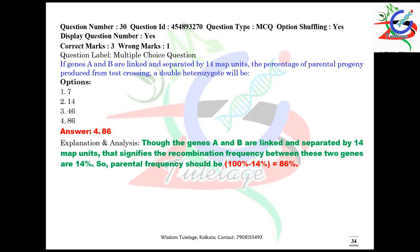Question number 30: if genes A and B are linked and separated by 14 map units, the percentage of parental progeny produced from test crossing a double heterozygote is calculated as: total percentage minus recombinant percentage — that means 100% minus 14% equals 86%.